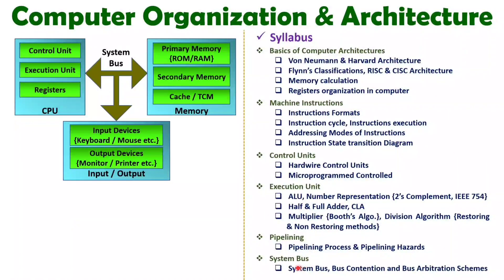After that I have covered how the system bus works. The system bus provides communication between memory and the CPU, and between I/O devices and the CPU. I also covered bus contention and arbitration schemes. The system bus includes the address bus, data bus, and control bus, and how all those things operate is covered in this unit.